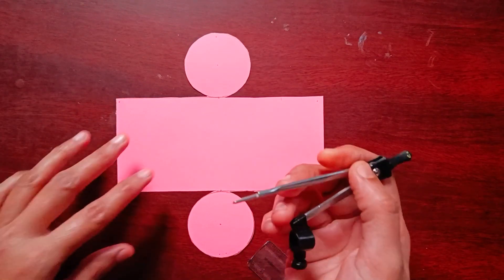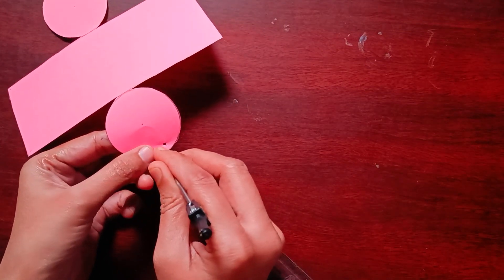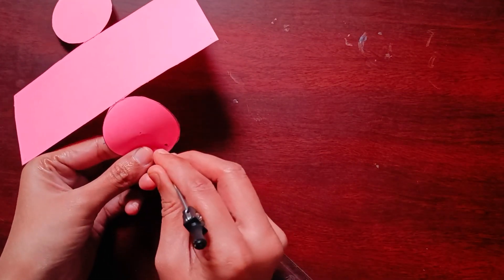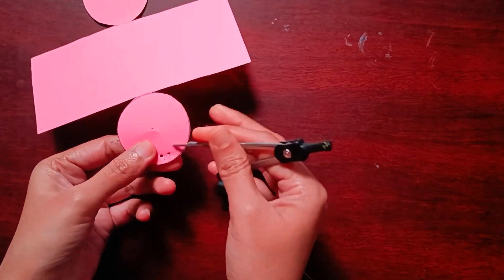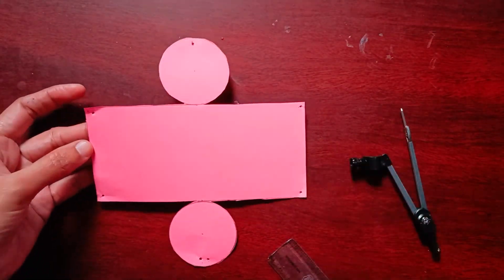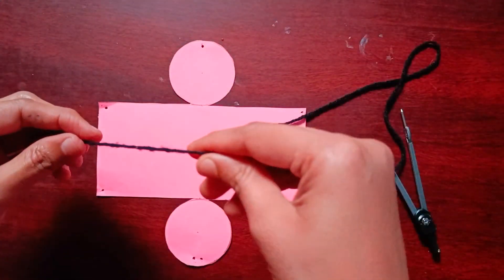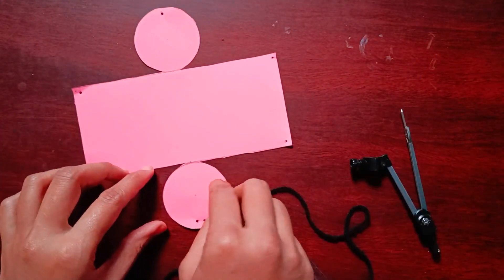Now we will hole with this protector. Now I hold it like this on the marked places. Now I take the wool and will pass through the hole.